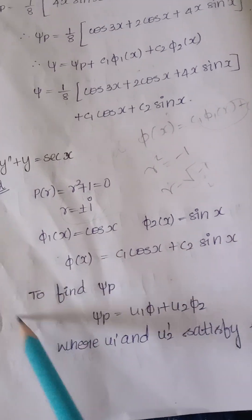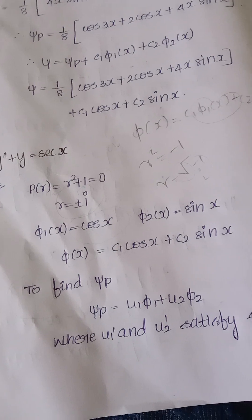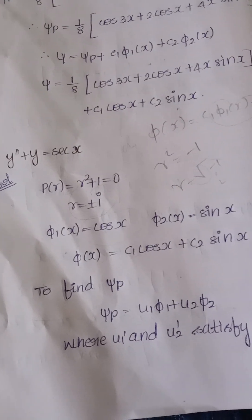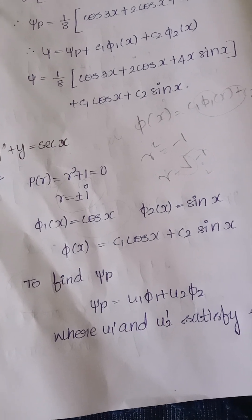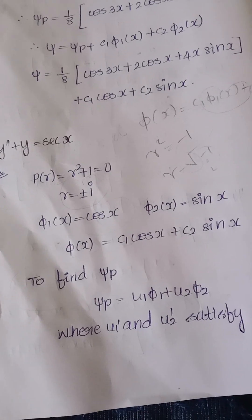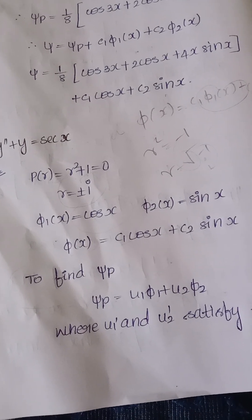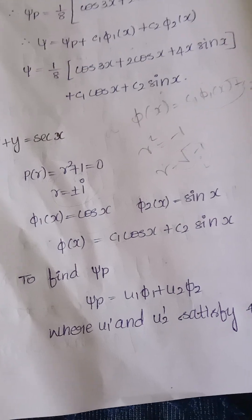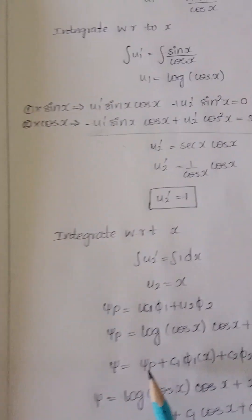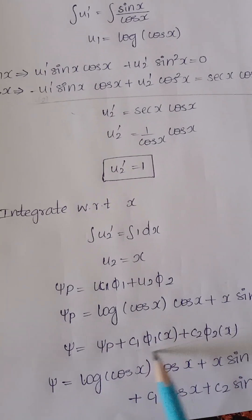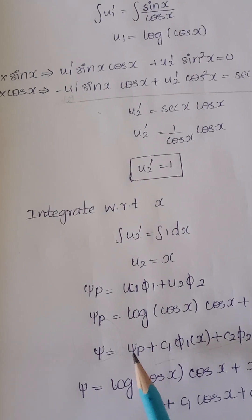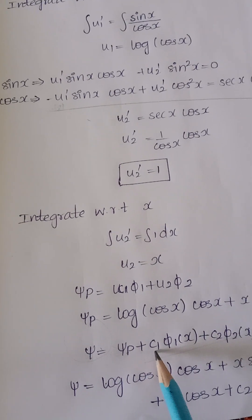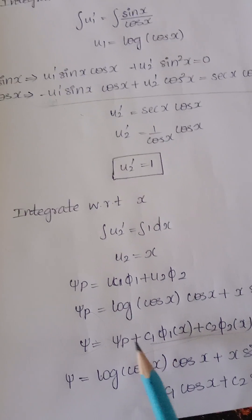Now we need to find the particular solution ψ_p. For a non-homogeneous equation, the full solution equals the particular solution plus the homogeneous solution: ψ = ψ_p + c₁φ₁(x) + c₂φ₂(x).